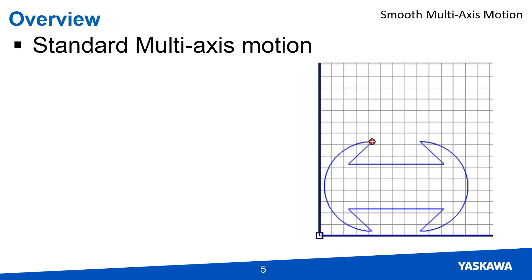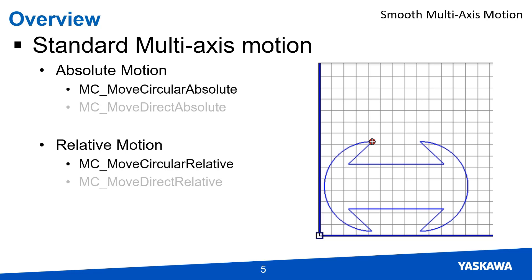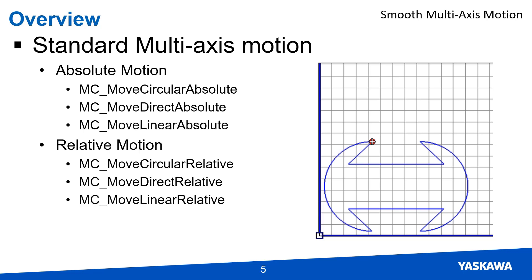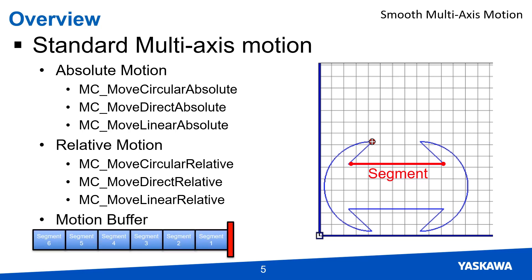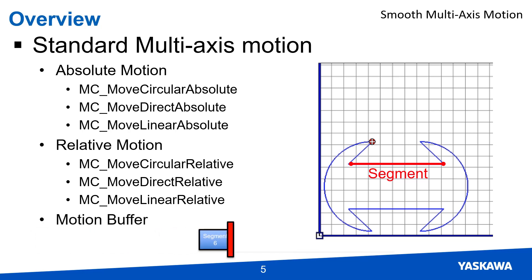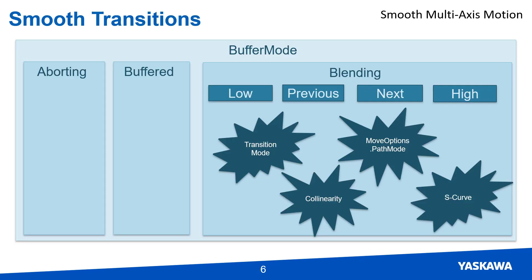To talk about smooth motion, we first have to review how normal multi-axis coordinated motion is created. Just like a single axis mechanism, there are relative and absolute moves that can be used to move the mechanism. For multi-axis coordinated systems, there are three types of moves: circular, direct, and linear moves. Each move from point to point is considered a segment. When a motion function block executes, that motion segment is added to the buffer and moves through it until the controller processes it and moves the actual motors. How these segments are joined determines visually and mechanically how the mechanism is going to perform.